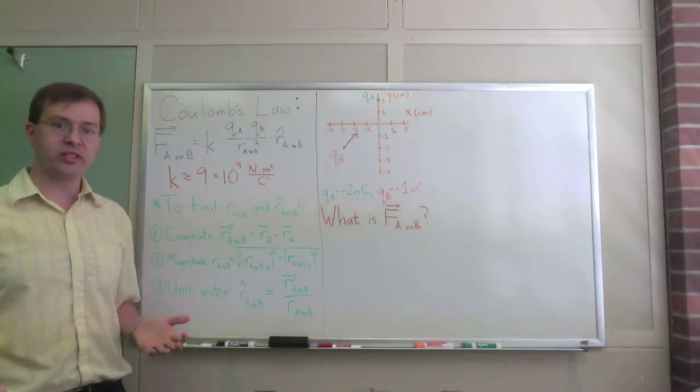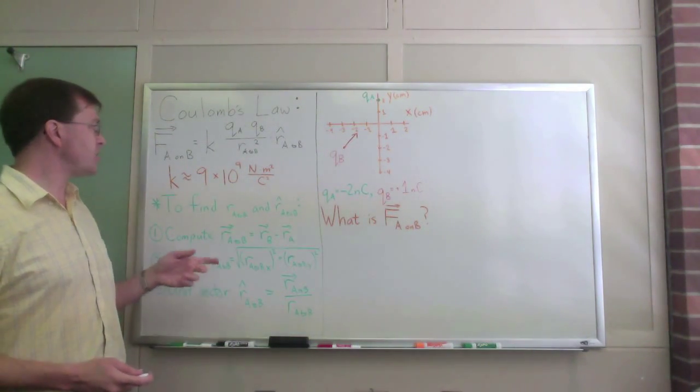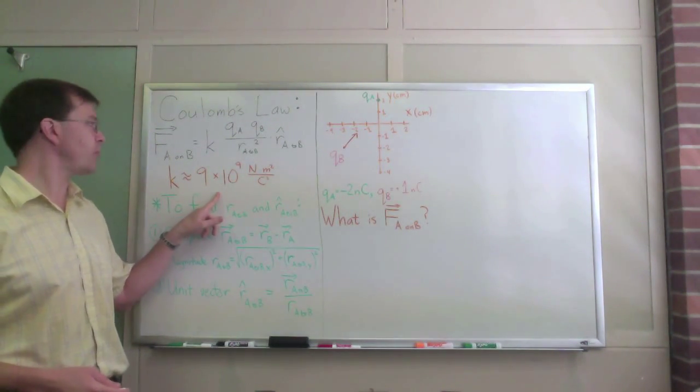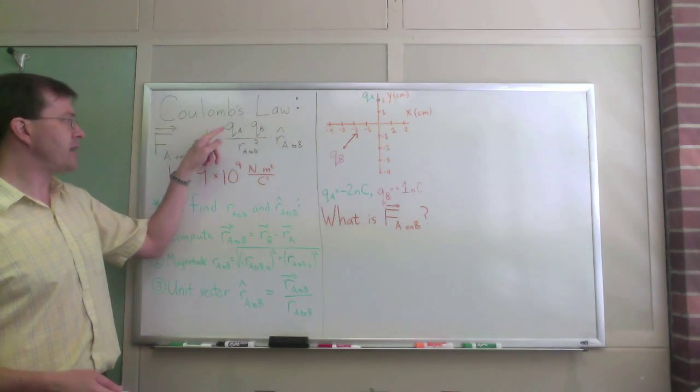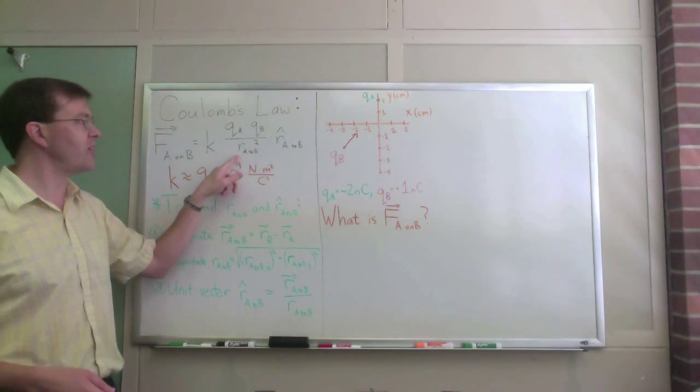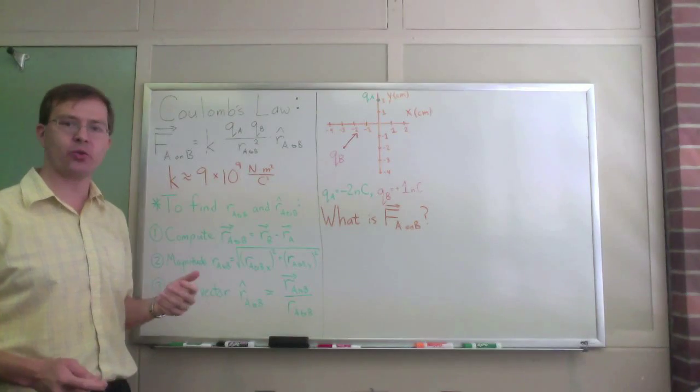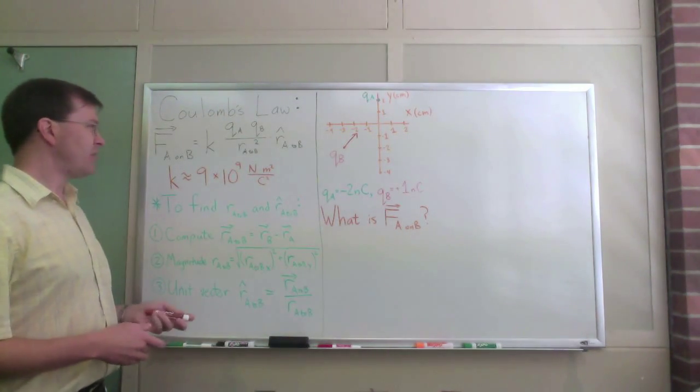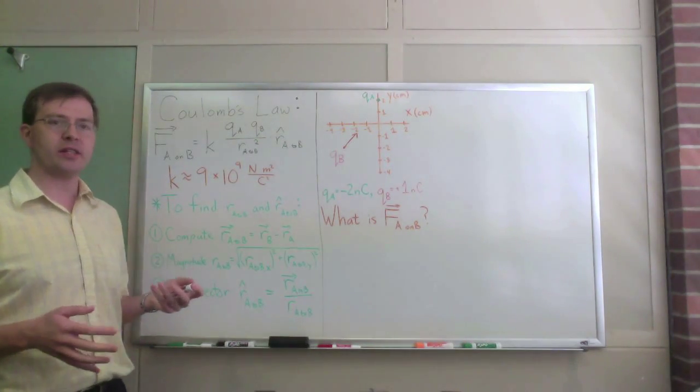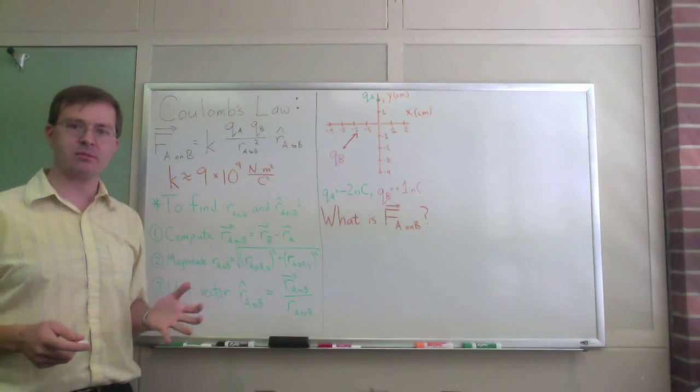Coulomb's law, relatively familiar. It's the force by A on B is equal to k, Coulomb's constant, which we'll approximate as nine times ten to the ninth newton meter squared per Coulomb squared, times Qa times Qb, the two charges, divided by r squared, the distance between the two squared, times r hat from A to B. That's the unit vector that points from A toward B. On their own, these components, it's a relatively simple-looking equation, but the pieces are a little bit complicated. In particular, the r hat takes some getting used to.